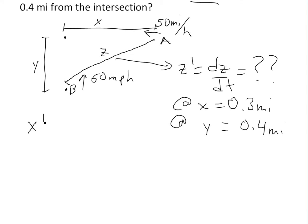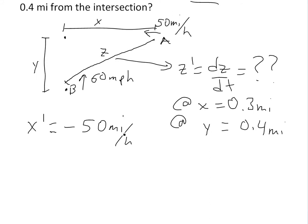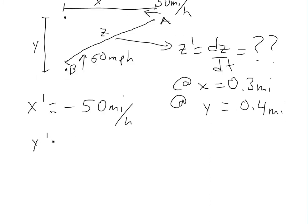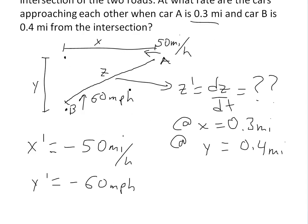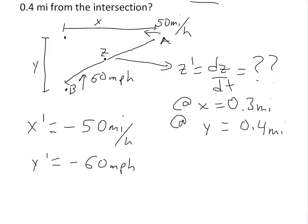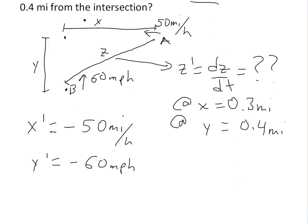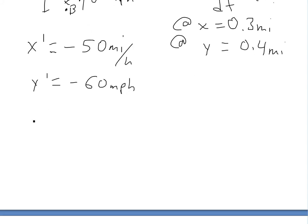We're given that x prime equals negative 50 miles per hour. It's negative because the distance x is getting smaller and smaller as car A approaches the intersection. Similarly, y prime equals negative 60 miles per hour, also negative because that distance is shrinking — going from 0.4 miles down to zero as the car reaches the intersection. Now we relate all three variables using the Pythagorean theorem.